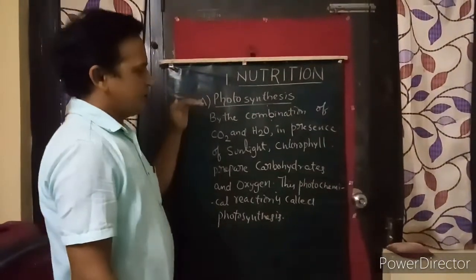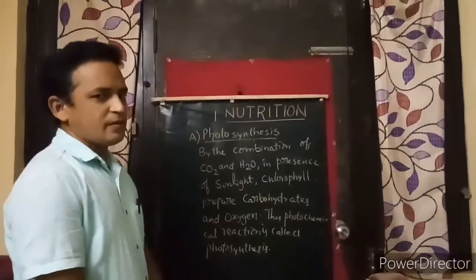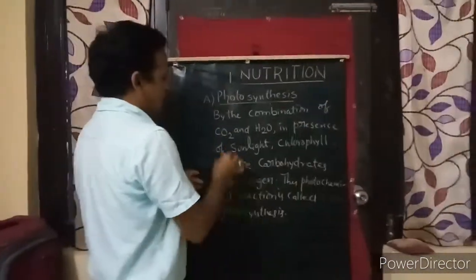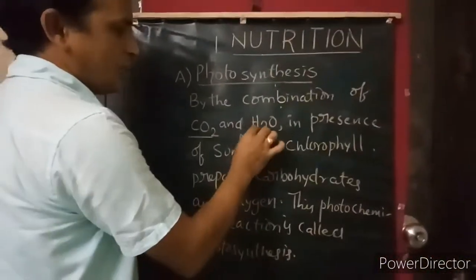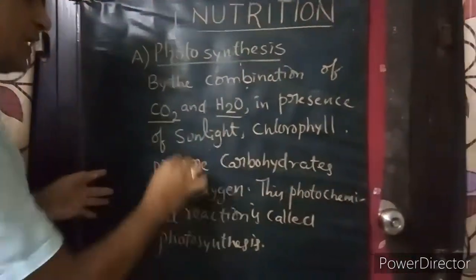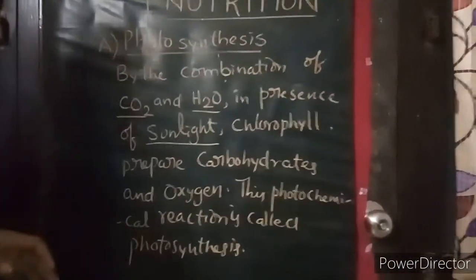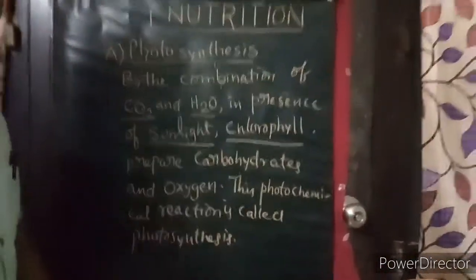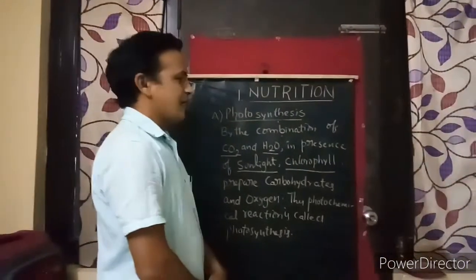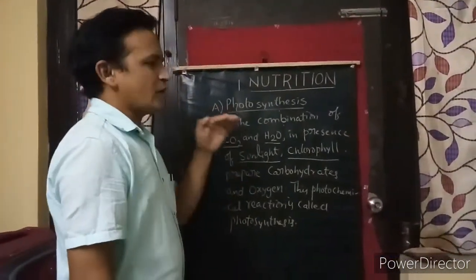Basing on the definition, we have to know there are four requirements for photosynthesis. The first one is carbon dioxide, the second one is water, the third one is sunlight, and the fourth one is chlorophyll.